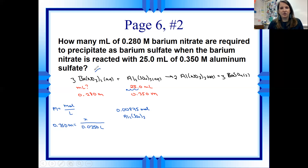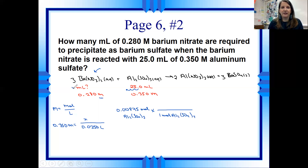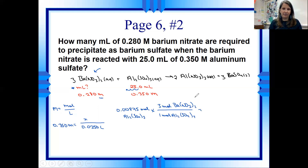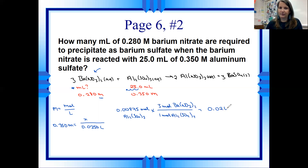Now we need information about the barium nitrate, so we do stoichiometry. The question is how far to take the stoichiometry. We have molarity and we're trying to find milliliters, so we just need to stop at moles of barium nitrate — once we have moles, we have enough to solve for milliliters. Using the mole ratio gives us 0.0263 moles of barium nitrate.